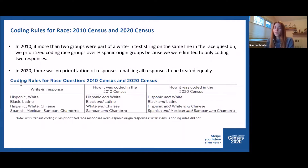The 2010 census used a complex series of coding rules to determine how to prioritize and assign up to two codes for each unique text string. If more than two groups were part of a write-in text string on the same line in the race question, we prioritized coding race groups over Hispanic origin groups, as we were limited to coding two responses within one write-in line. In the 2020 census, our subject matter experts coded what they saw — up to six responses from left to right, regardless of race group or Hispanic origin — enabling all responses to be treated equally.